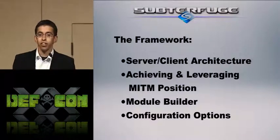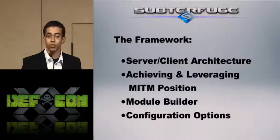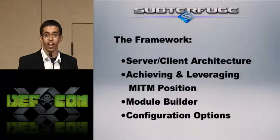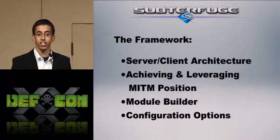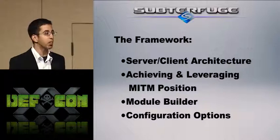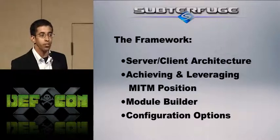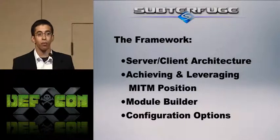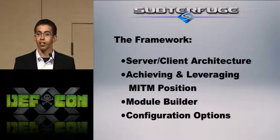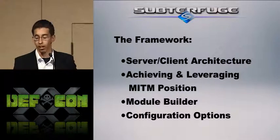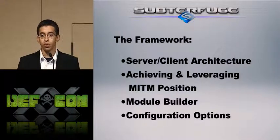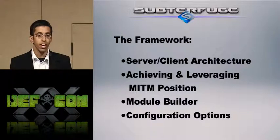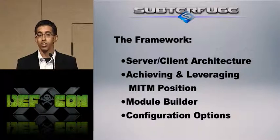So let's talk about the framework — this is really what makes Subterfuge different from most man-in-the-middle attack tools. It's got a server-client architecture, which means you can actually collaborate with it. Most of the time with a man-in-the-middle attack, you can only have one person, because there can't ever be two men in the middle — the network would go down. With Subterfuge, there's one person doing the man-in-the-middle: the Subterfuge server. Clients can connect to that server and all use it at the same time.